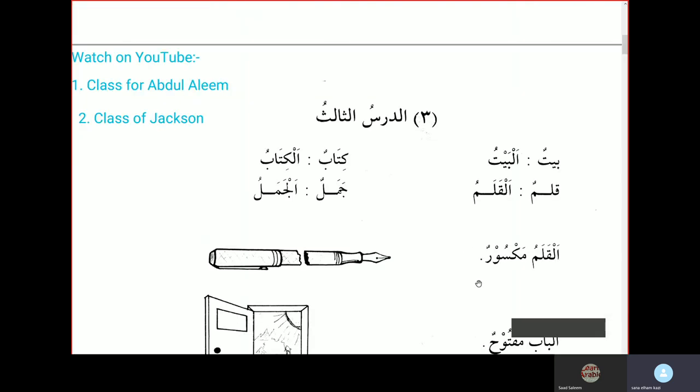Now we will go on to the textbook and do the third lesson, addursu thaalith, the third lesson. Baytun - what is baytun? A house. So now if you add al to it, it becomes al-baytu, the house. The tanwin goes away and it becomes al-baytu.